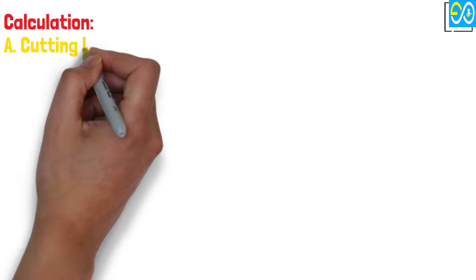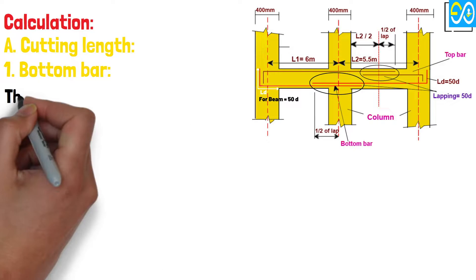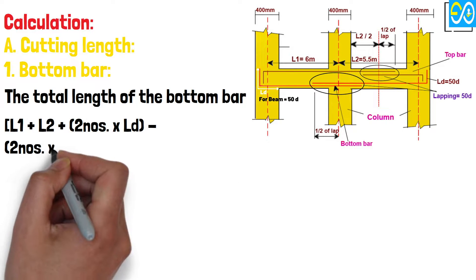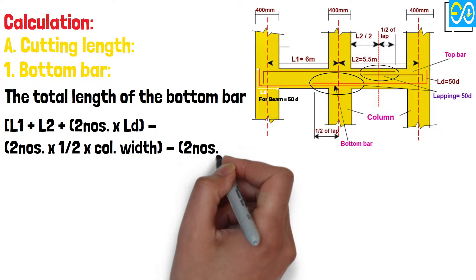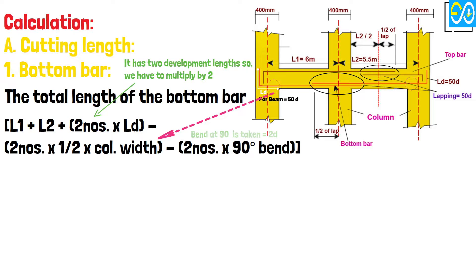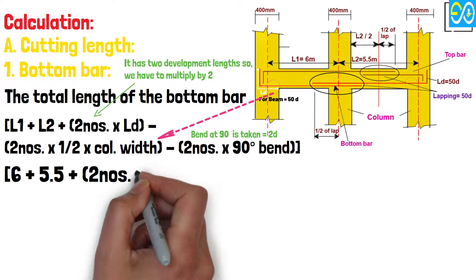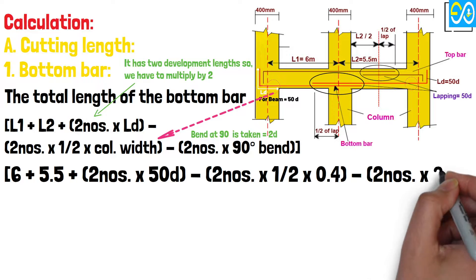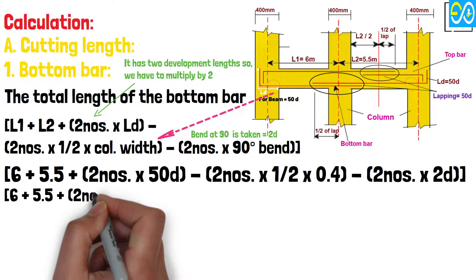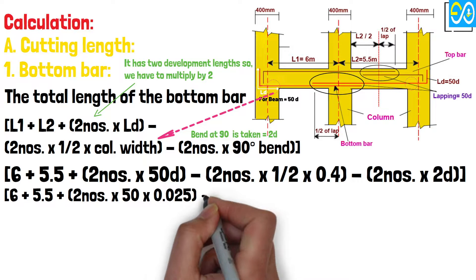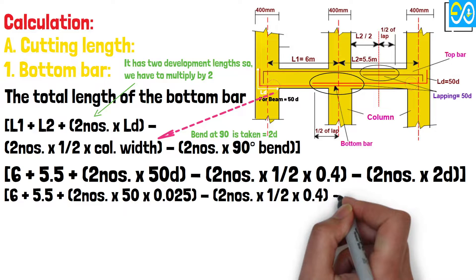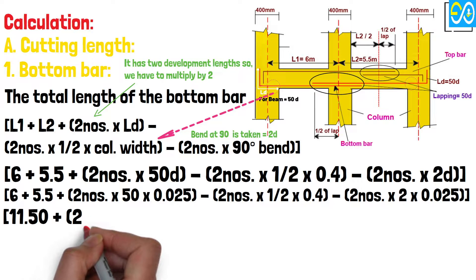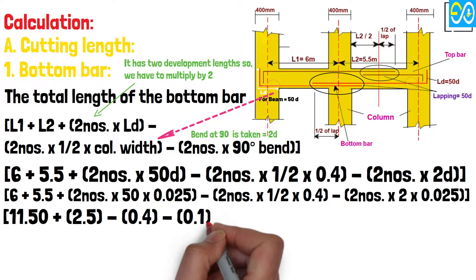Calculation. Bottom bar: The total length of the bottom bar equals L1 plus L2 plus 2 times development length minus 2 times 1/2 times column width minus 2 times 90-degree bend. Equals 6 plus 5.5 plus 2 times 50 diameter minus 2 times 1/2 times 0.4 minus 2 times 2 diameter. Equals 6 plus 5.5 plus 2 times 1.25 minus 2 times 0.2 minus 2 times 0.05. Equals 11.5 plus 2.5 minus 0.4 minus 0.1, equals 13.5 meters.